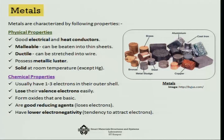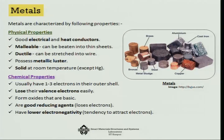Metals form oxides which are basic in nature — the easiest example is calcium oxide. So all metallic oxides are basic in nature. They are good reducing agents because they lose electrons and have lower electronegativity — the tendency to attract electrons is lower, which you will see is more characteristic of non-metals. That is the group of metals.